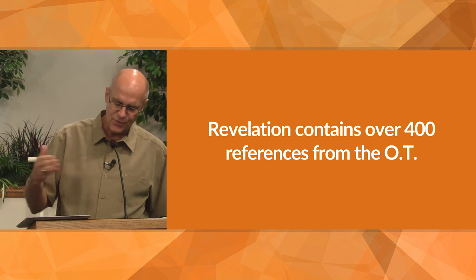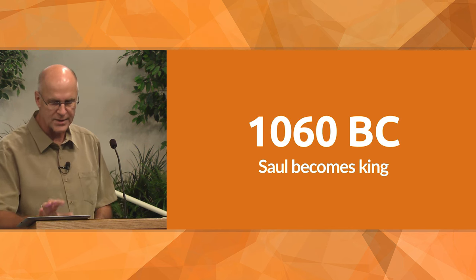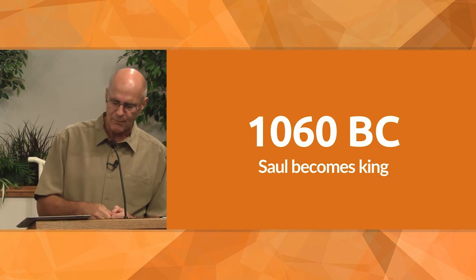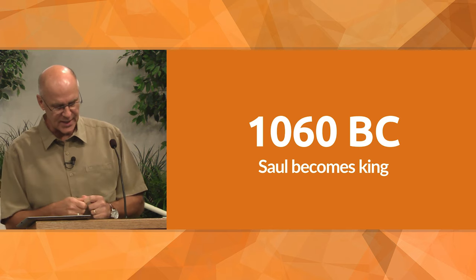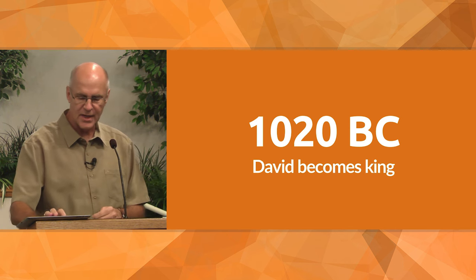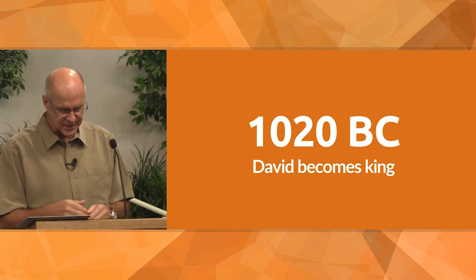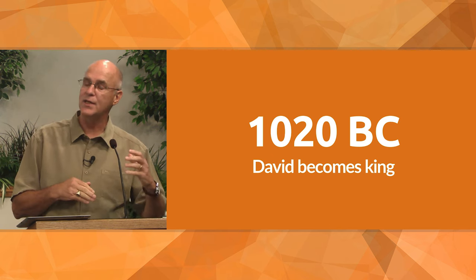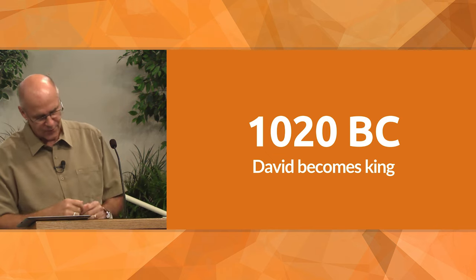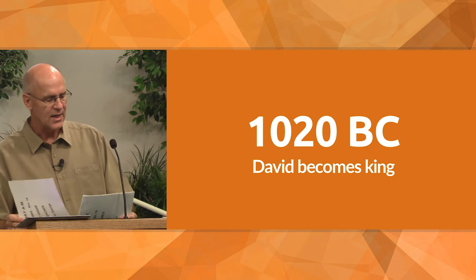And then in 1060 BC, Saul becomes the first king of the united Israel. The twelve tribes are united under a single king — Saul is that king. Then in 1020 BC, David becomes king and subdues the entire land. He extends the borders of the kingdom from the Egyptian desert in the south to the Euphrates River in the north, from the Mediterranean Sea in the west to the desert in the east.